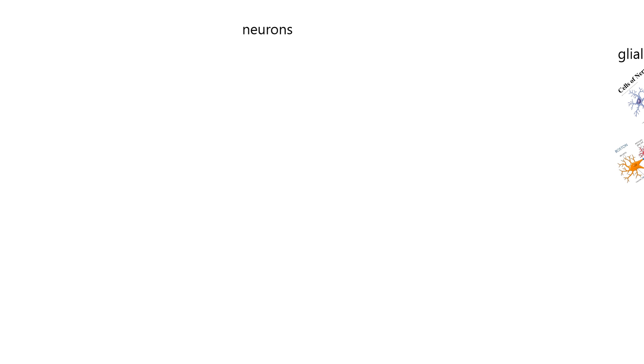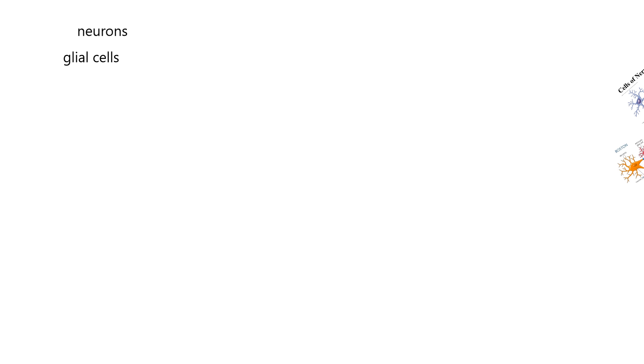The nervous system contains two different types of cells in a broad sense. Neurons are very common and they carry action potentials, nerve impulses. Another very important cell found in the nervous system is called glial cells, also called neural glial cells. They are supporting cells, and without them the neurons couldn't function.